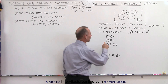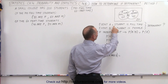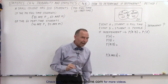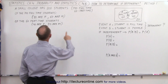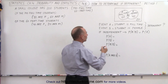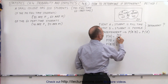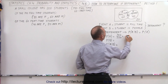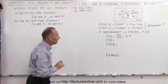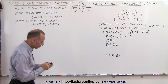First, we're going to figure out the probability of A. Event A is that the student is a full-time student. There's a total of 140 full-time students out of 200, so that probability is 140 out of 200, which is equal to 0.7. There's a 70% chance that picking a random student, that student will be full-time.